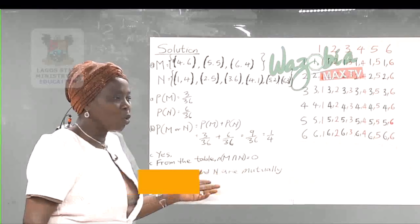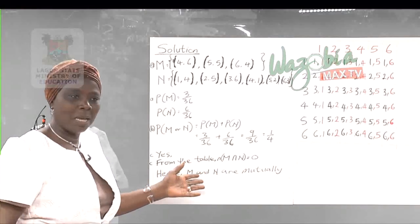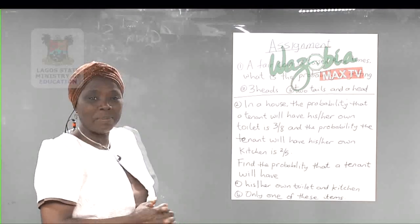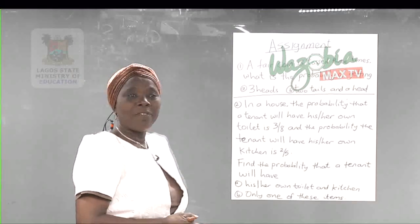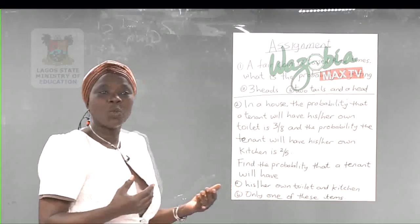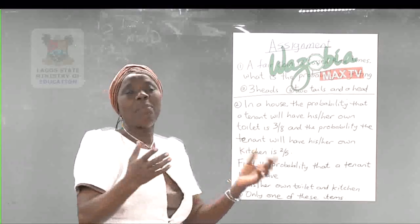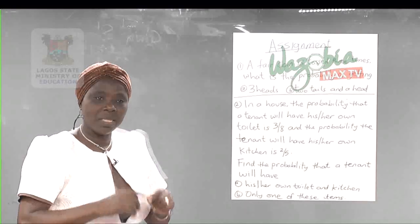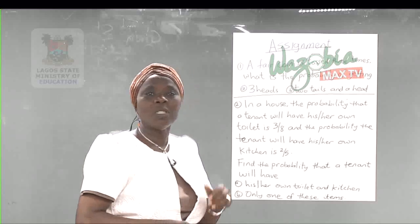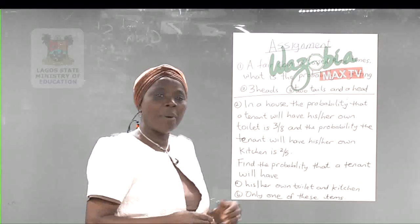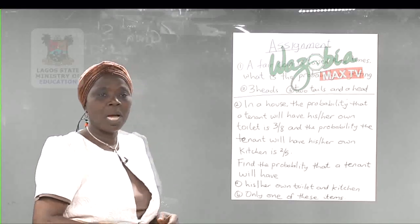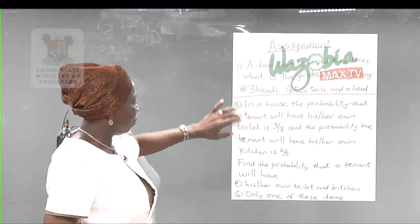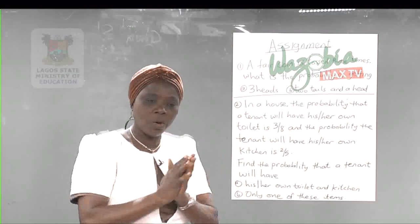We go to example 2 after a timeout. We are on the assignment segment. Having recalled what our teachers have taught us on probability, to get A1 in mathematics we need to be very friendly with past questions. Mathematics is not about reading — it is about picking questions and working them out.